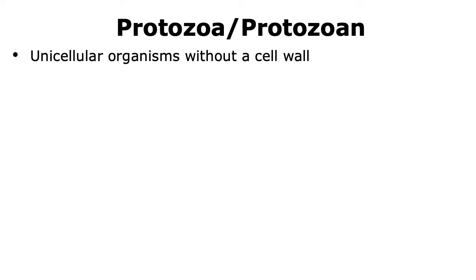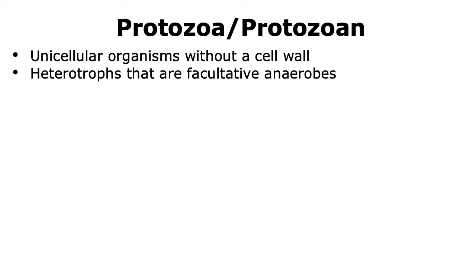Now let us look more into the structure of protozoans. Protozoans are unicellular organisms, and they don't have a cell wall. They're heterotrophs, which means they can't make their own food, unlike plants, and they usually are facultative anaerobes. When we look at the size of protozoans, they can range from 2 to 100 micrometers.